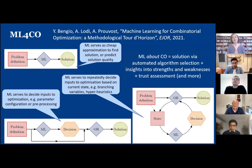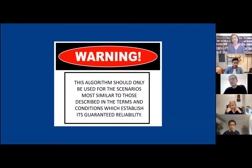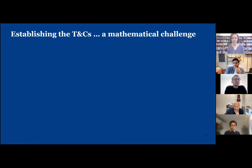Machine learning can do more than just help find a solution to combinatorial optimization. Machine learning can help us learn about combinatorial optimization. We can get a solution via automated algorithm selection, but machine learning offers much more possibility — the opportunity for gaining insights into the strengths and weaknesses of a collection of algorithms, a portfolio, and also learning about whether or not we can even trust the solutions. That's what I'm going to talk about today with instance space analysis. Over the last 15 years I've been a little bit obsessed with trying to attach a warning label to algorithms.